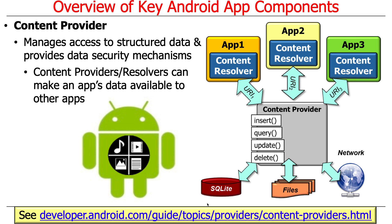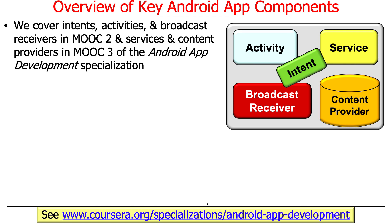There's also some really cool stuff in the content provider feature set that allows content resolvers to be notified when things change — if something is updated, you can notify everybody and they can update their views. We're not going to say much more about this here, but if you're curious, I have a Coursera MOOC specialization where MOOC 2 and MOOC 3 of the five-course specialization cover these topics in detail. Intents, activities, and broadcast receivers are covered in MOOC 2, and services and content providers are covered in MOOC 3.